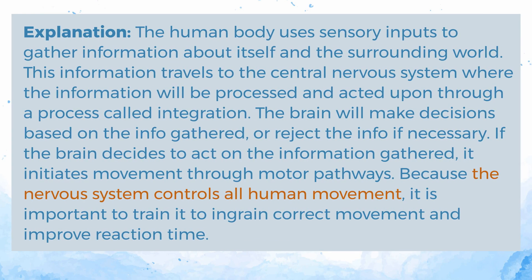The human body uses sensory inputs to gather information about itself and the surrounding world. This information travels to the central nervous system where it will be processed through integration. The brain makes decisions based on the information gathered, or rejects it if necessary. If the brain decides to act, it initiates movement through motor pathways. Because the nervous system controls all human movement, it is important to train it to ingrain correct movement and improve reaction time.